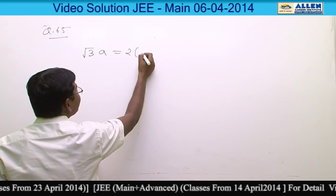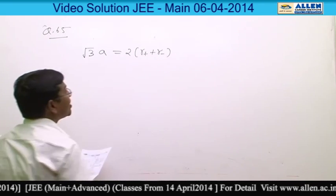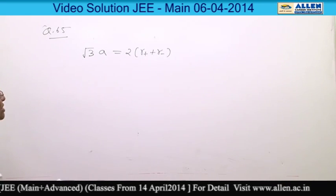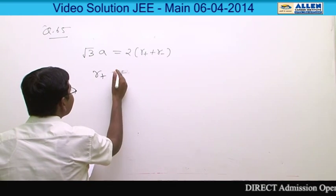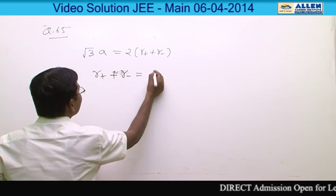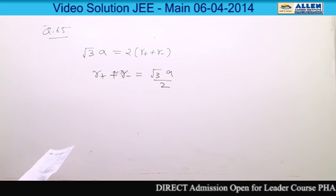And the value of root 3a will be equal to twice of r plus plus r minus, where r plus is the radius of Cs plus. From here, r plus plus r minus is equal to root 3a by 2. That is your answer 1.